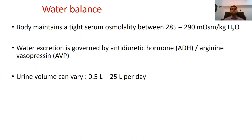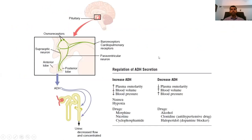Apart from that, water balance also becomes very important. The body tries to maintain osmolality within a tight range of 285–290 mOsm/kg of water, and this is mainly governed by antidiuretic hormone. Generally, urine volume can vary between 0.5 to 25 litres per day, and this is also mainly governed by the amount of antidiuretic hormone secretion.